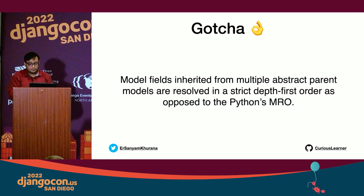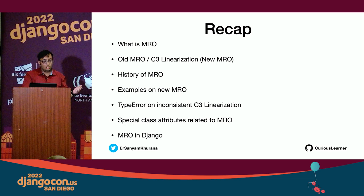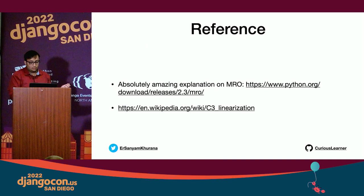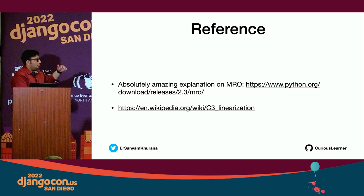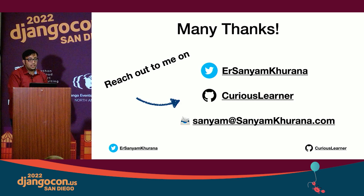In recap, we discussed MRO, the old DLR algorithm, the new C3 linearization, the history of MRO, worked examples, how TypeError is raised in C3, special class attributes, and MRO in Django. If you want to read more, the first reference contains code you can play with to understand how MRO works in Python 2 and Python 3. If you have any questions, you can reach me on Twitter at ersayamkhurana, on GitHub at Curious Learner, or by email at sayam@sayamkhurana.com. Thank you very much.